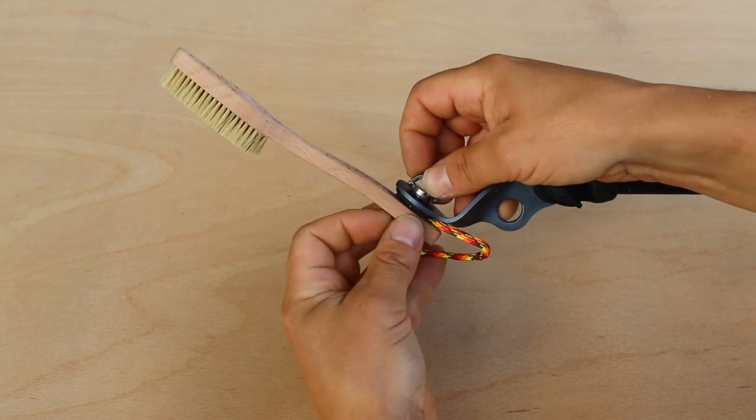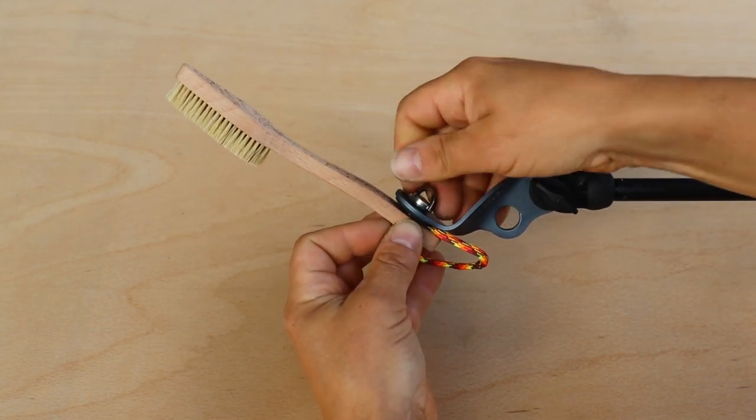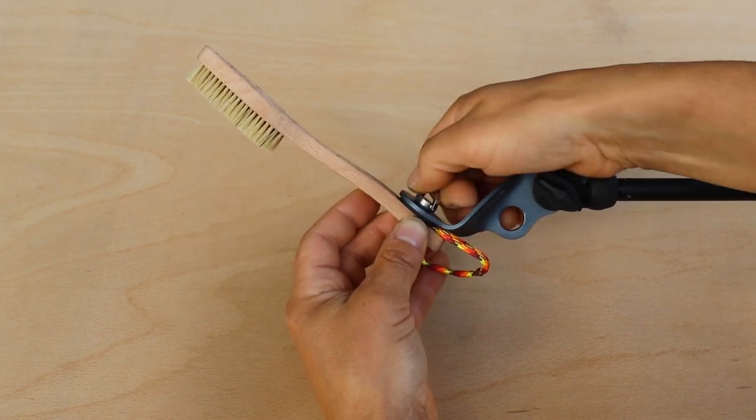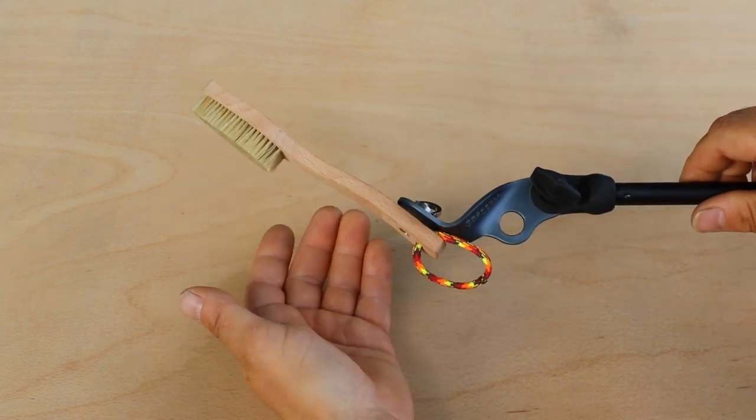You can also turn the brush up the other way. The brushing stick's flexibility means that it can be used to brush slopers, ledges, crimps, side pulls and even undercuts.